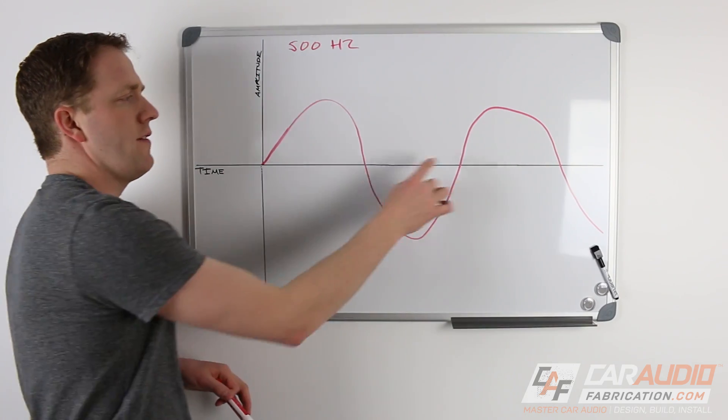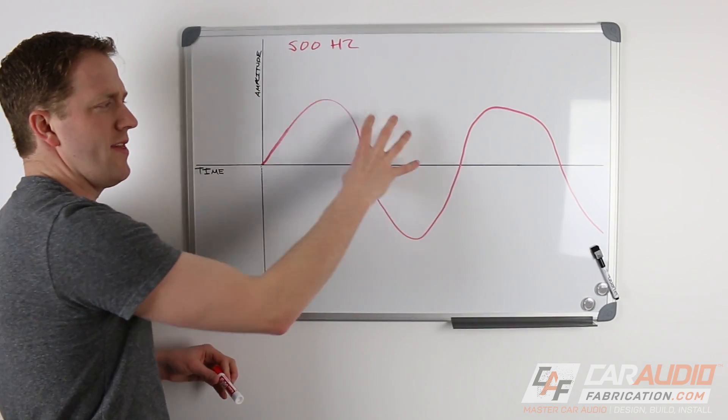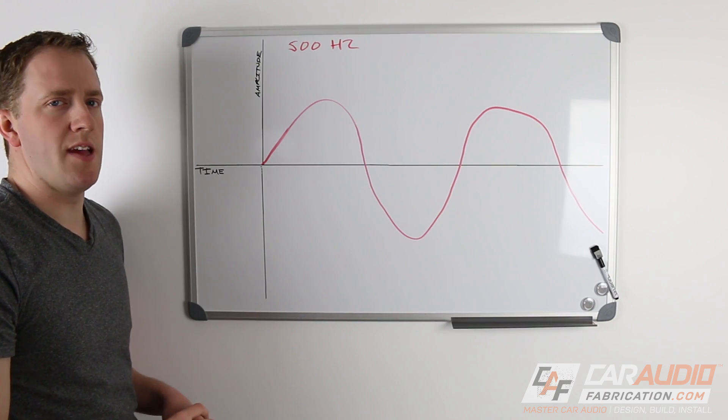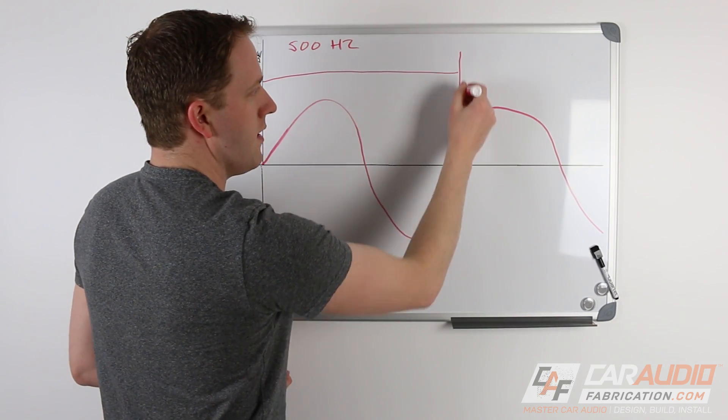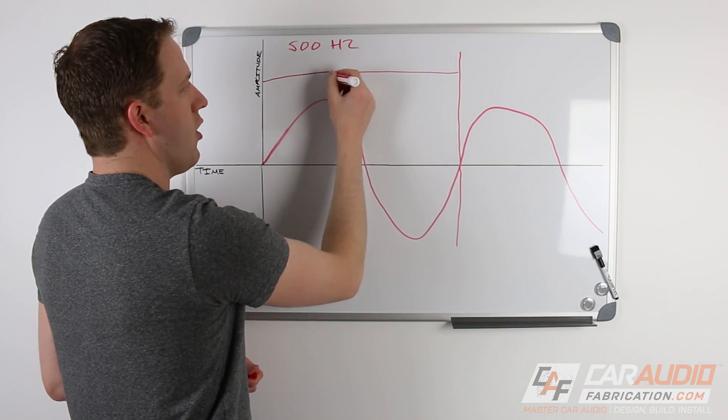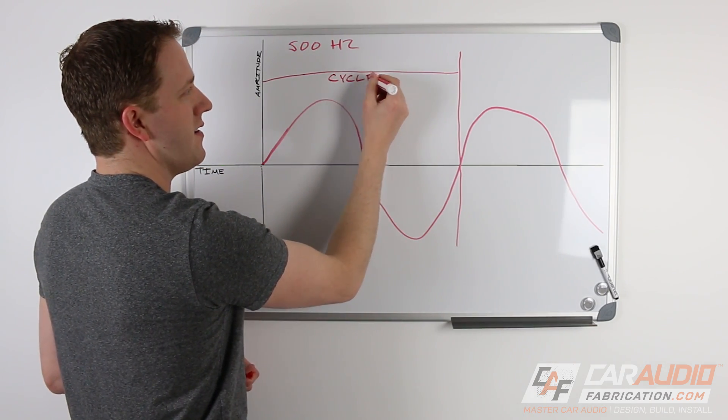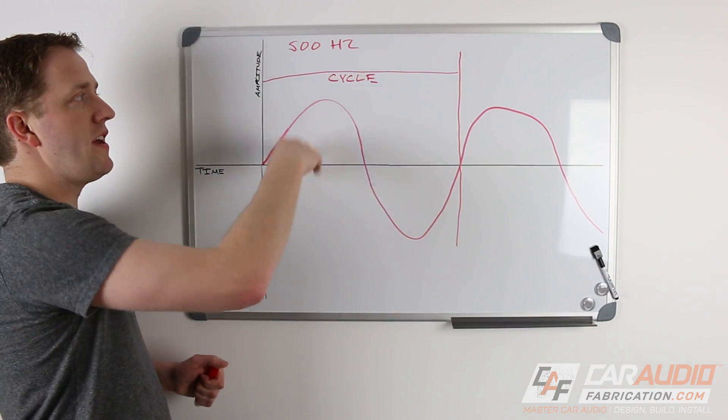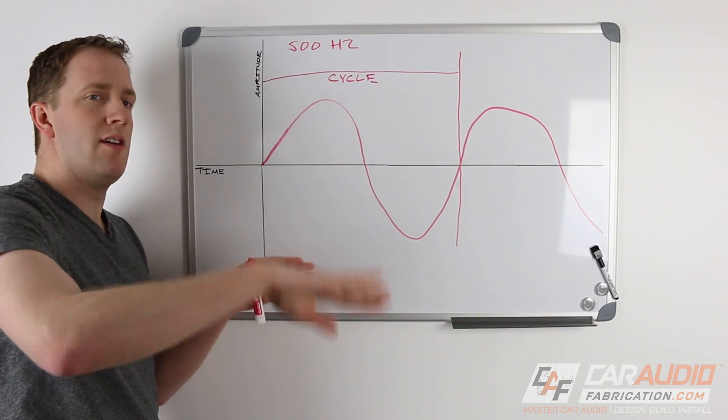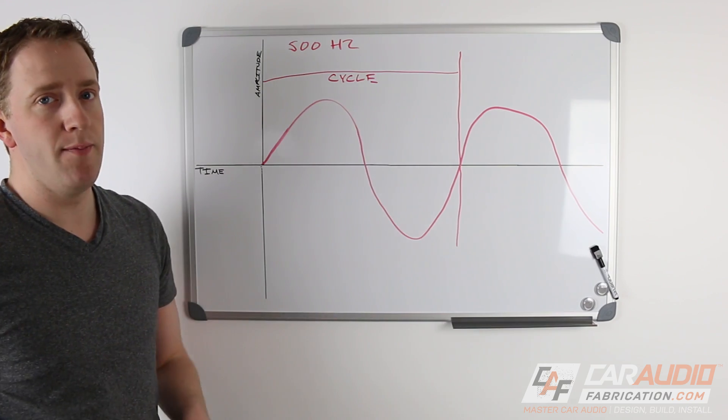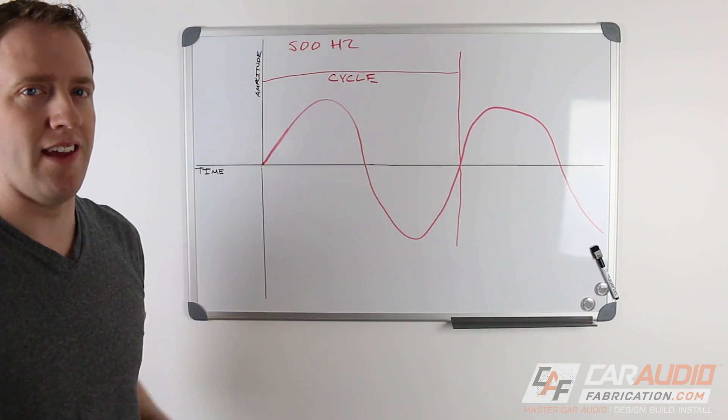So wait, what's the definition for this? What is this that's happening 500 times a second? Well, this, from here to here, is called a cycle. So the speaker is completing 500 cycles of full up, full down, back to the zero point, 500 times a second. 500 cycles a second.